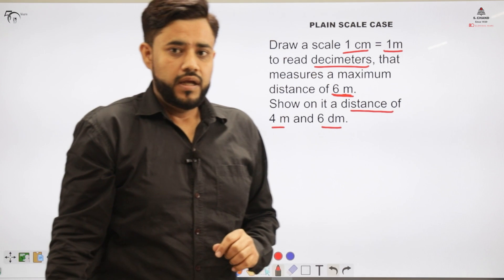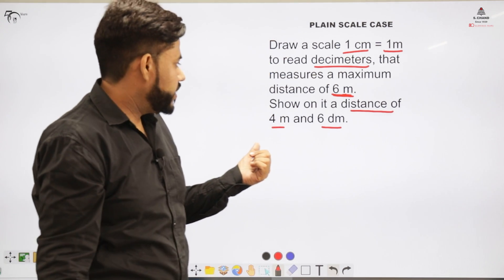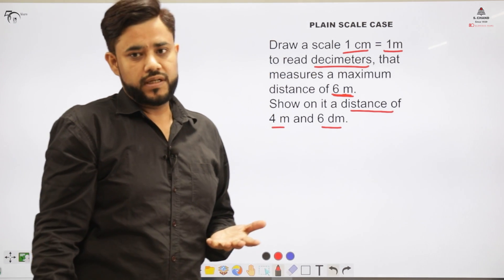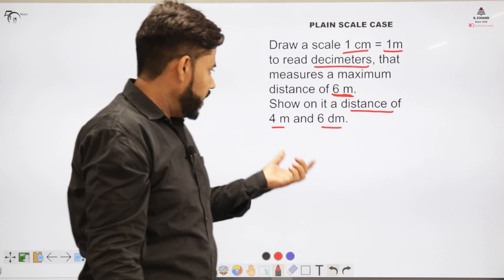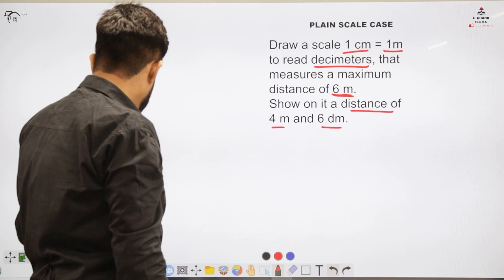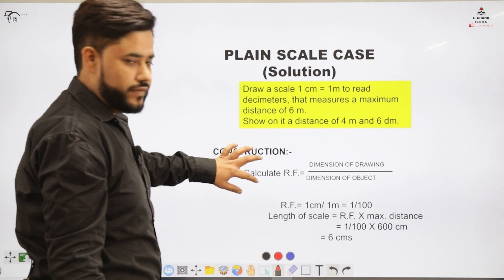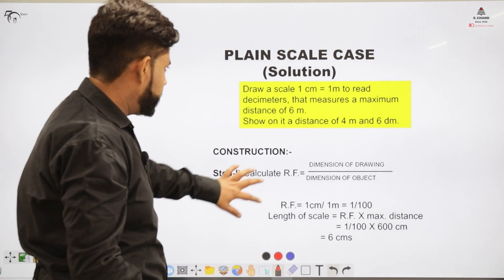That means if this decimeter representation is there, that means we are reading up to one decimal place. So for that we will be using the plane scale situation. Now in order to draw this plane scale we have a set procedure and we have certain steps for this.